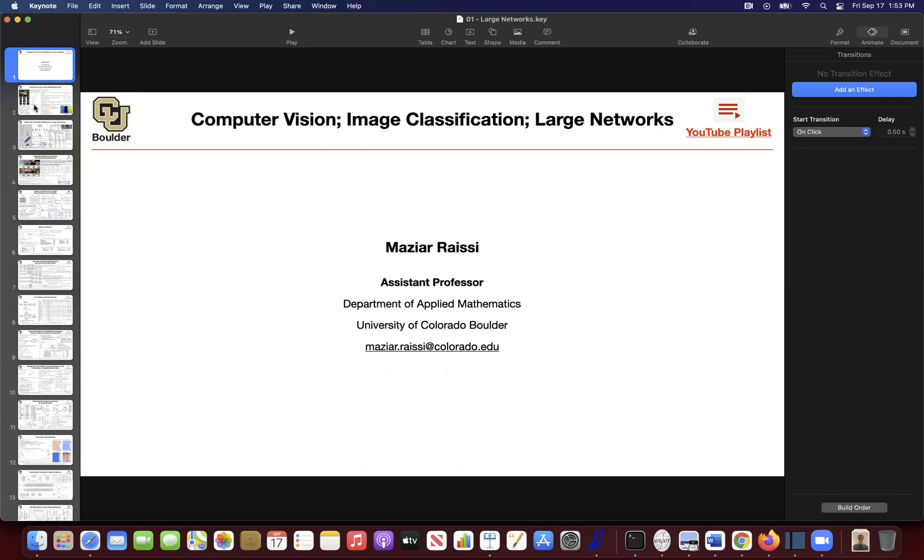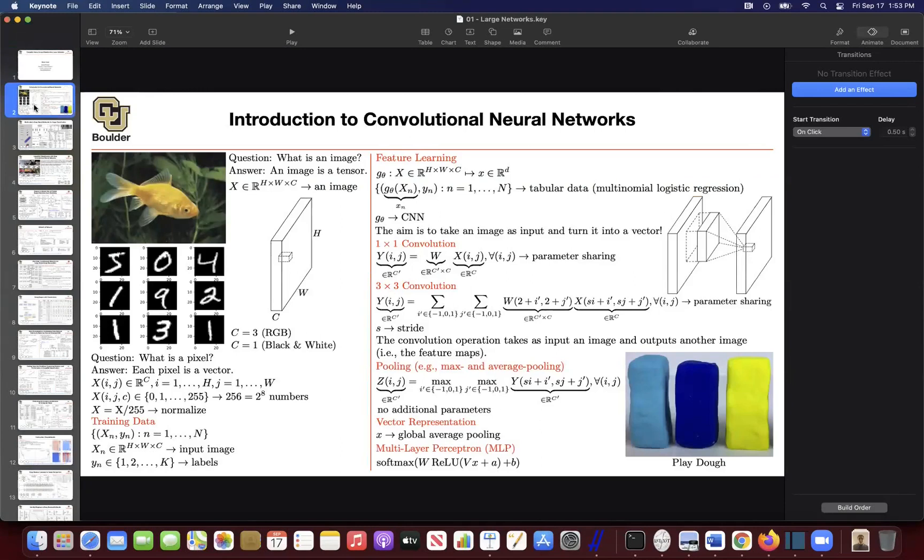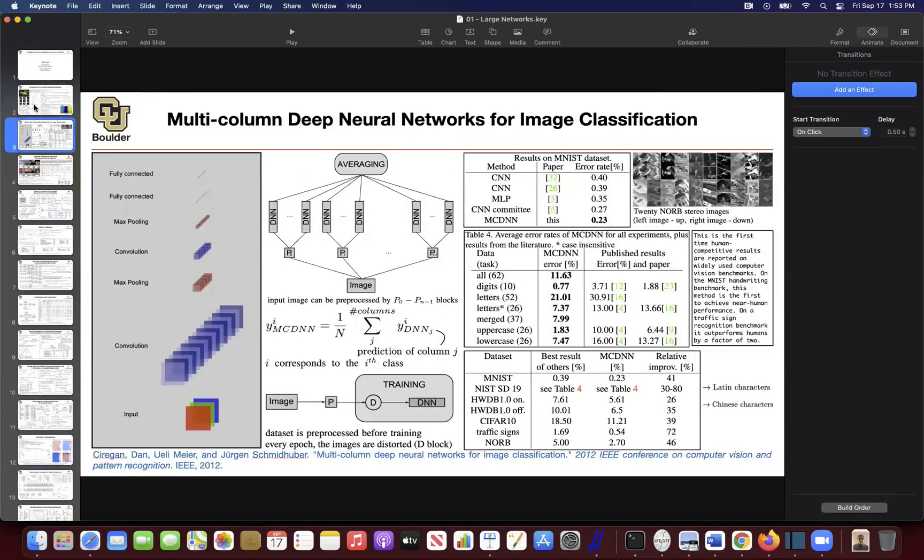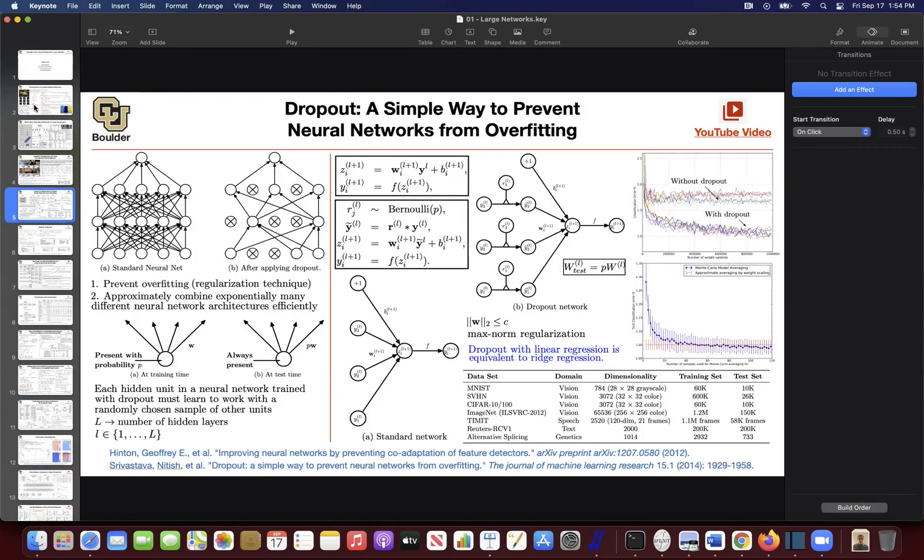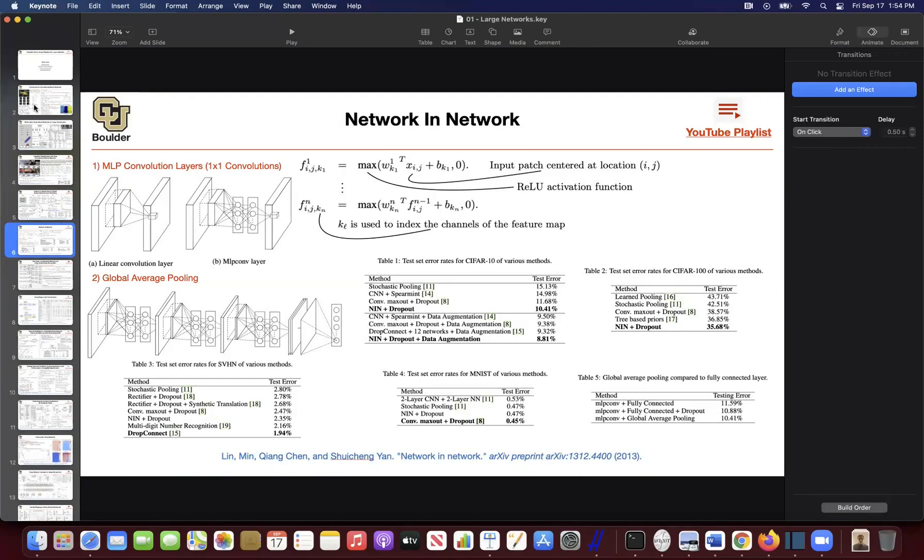We started with different types of convolutions. We started with basic convolution, then multi-column, which is useful whenever you want to do model parallelism. Then we introduced AlexNet, then some useful techniques while training neural networks like dropout, and another architecture, VGG.